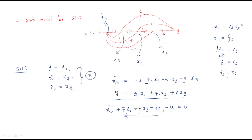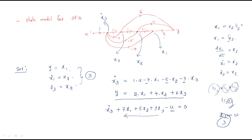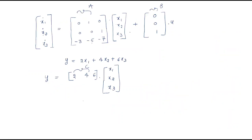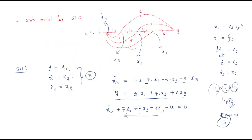We have three 1/s integrators in the signal flow graph, so the degree is 1/s cubed, meaning the system degree is three. Therefore we automatically have three state variables. Using this integration concept, we identify where x1, x2, and x3 are, and then derive the complete state transition matrix and state model. I hope all of you understand this session. Thank you.